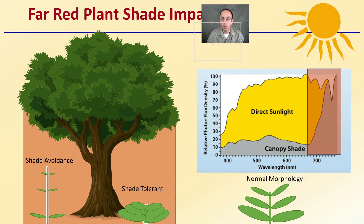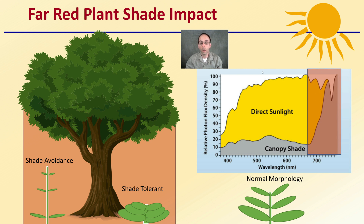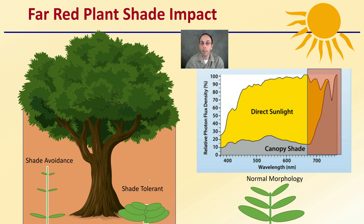Looking at Far Red plant shade impacts: normal morphology should look like a typical plant. If there's shade avoidance — a plant grown in a shady location under wavelengths filtered by a tree — we see those plants will have small leaves and will stretch quite a bit. If they're a shade tolerant plant under that same filtered spectrum, they'll have a much shorter, compact morphology with slightly wider leaves. The spectrum definitely shifts and changes for those plants under canopy shade versus direct sunlight.